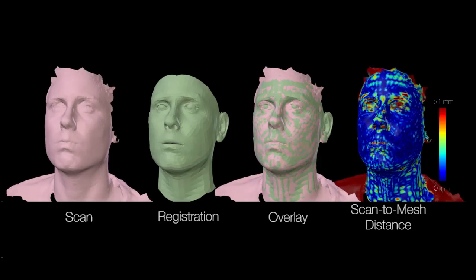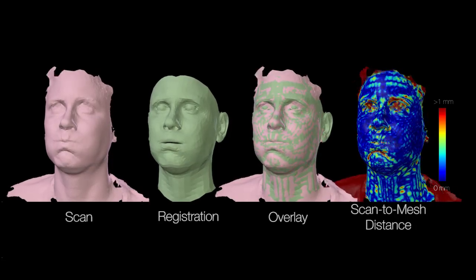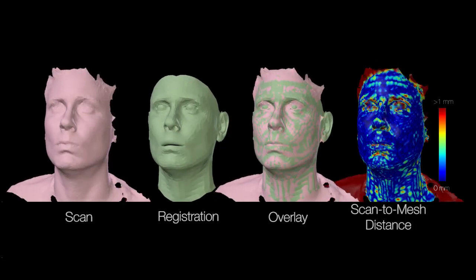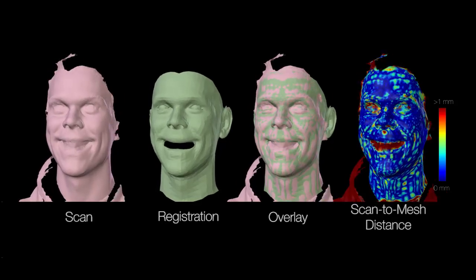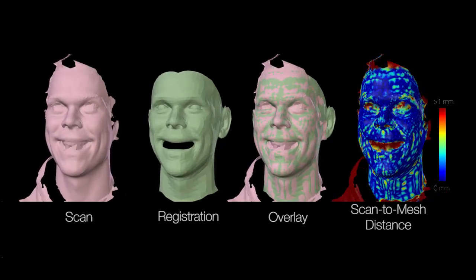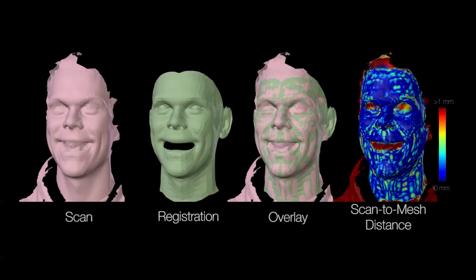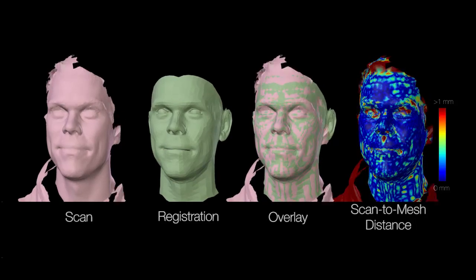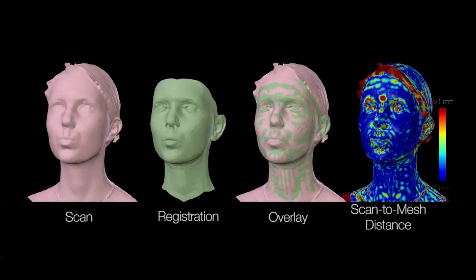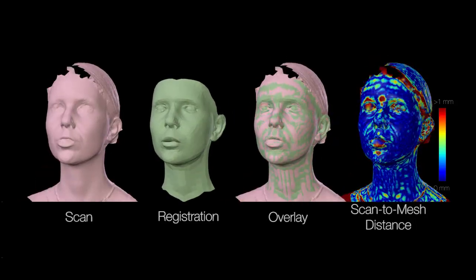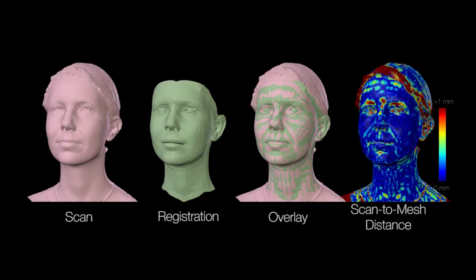The distance between the scan and the registered template is color-coded, with hot colors being larger. For most of the face region, the distance between the scan and our registered mesh is significantly lower than 1mm. Subtle facial motions, for example in the eyebrow and lip regions, are well tracked.